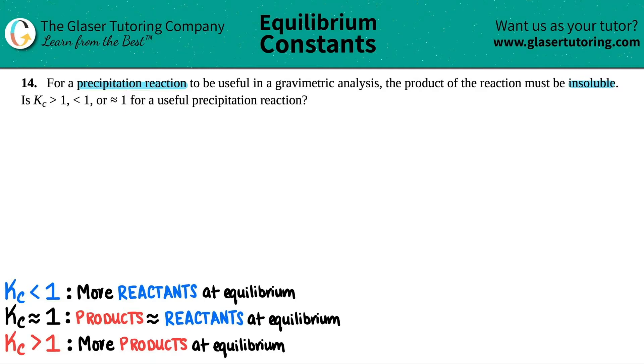Okay. So they're saying for a precipitation reaction, the product must be insoluble. So let's just do a precipitation reaction. I'll do the net ionic equation just to kind of make it simple. Let's just say that I have silver, which is a plus 1 ion, and that's aqueous because it's an ion, and I'm reacting it with chloride ion. That's a Cl minus 1.